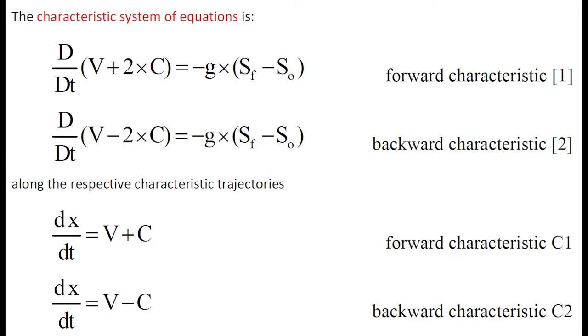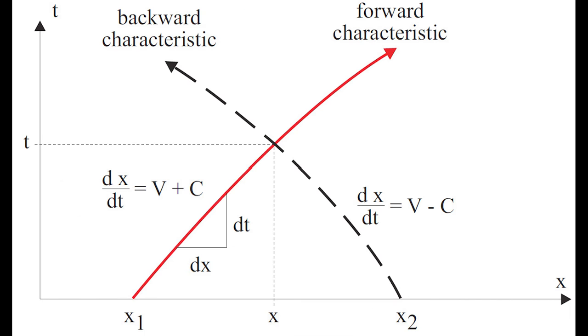The characteristic system of equations can be expressed as a variation with time of V plus 2C equal minus G times SF minus S0 along a forward characteristic with a trajectory dx over dt equal V plus C, and a variation with time of V minus 2C equal minus G times SF minus S0 along the backward characteristic with a trajectory dx over dt equal V minus C.